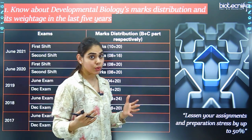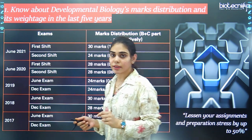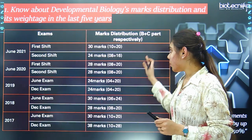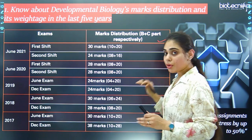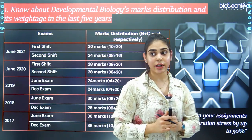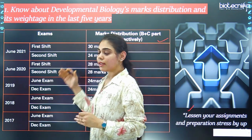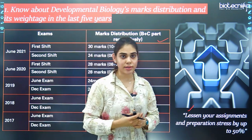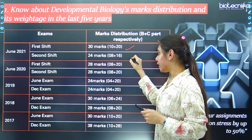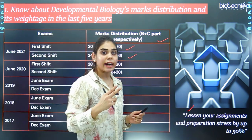Now let us come into the insights of a study plan for this unit. The very first important thing is you should always know about developmental biology's marks distribution and its weightage in the last five years. Knowing the marks distribution will lessen your workload by up to 50%. In June 2021, conducted in two shifts, the first shift had 30 marks and the second shift 24 marks. In June 2020, both shifts had 28 marks each.